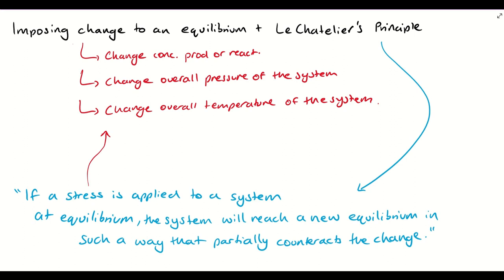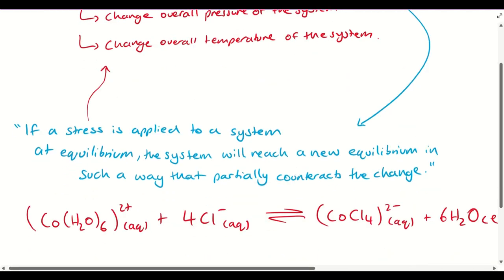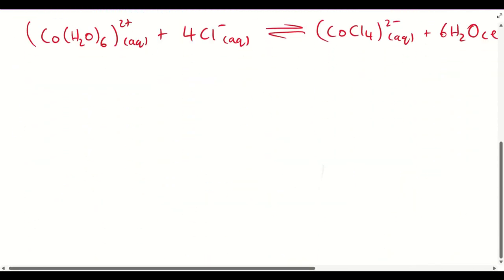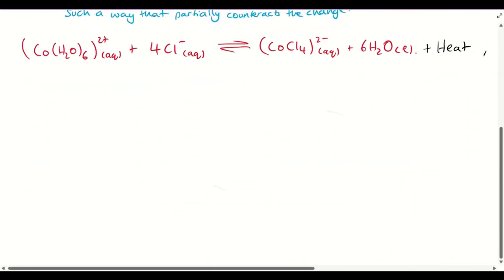The important thing to note is that Le Chatelier's principle is just a prediction. We have to use our collision theory and rate of reaction to be able to prove Le Chatelier's principle correct. So let's take a look at this example.